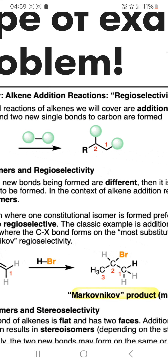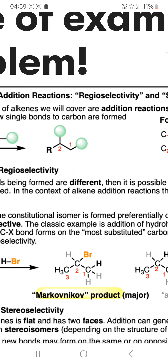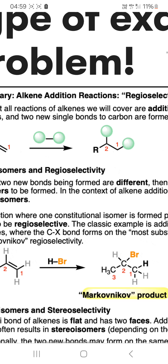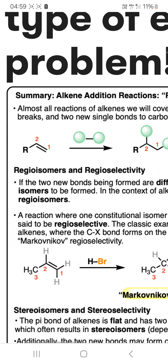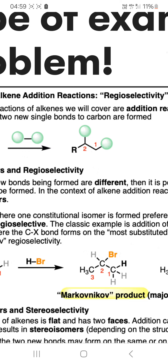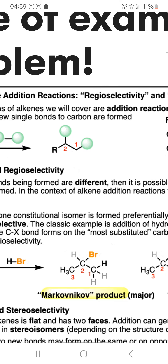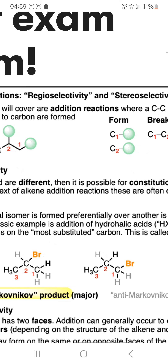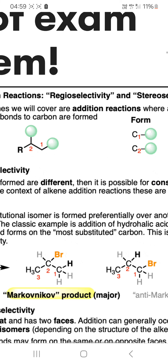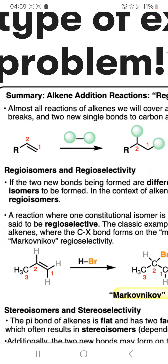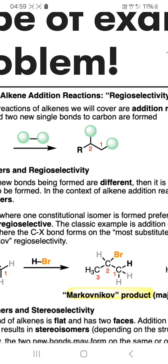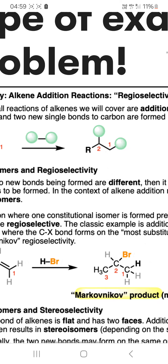Summary of Alkene Addition Reactions: Regioselectivity and Stereoselectivity. Almost all reactions of alkenes we will cover are addition reactions, where a carbon-carbon pi bond breaks and two new sigma bonds to carbon are formed.